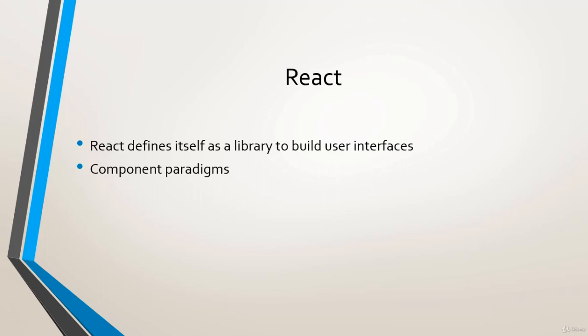React is a very famous library for features that make it stand out from other options. One of them is that it is progressive — we mean that we can adopt it incrementally in our existing developments. We can use React in a small part of a web application without touching the rest. For example, if we have a website that works with jQuery and want to modernize it, we can do it step by step, starting with something as simple as a button.